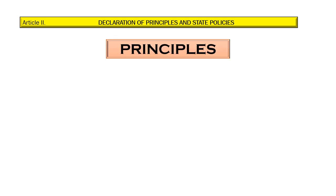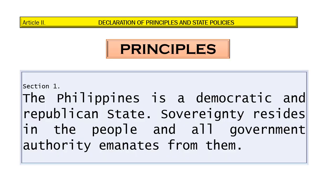Article 2 of the 1987 Constitution is about the Declaration of Principles and State Policies. For the principles, we have Section 1: The Philippines is a democratic and republican state. Sovereignty resides in the people and all government authority emanates from them.